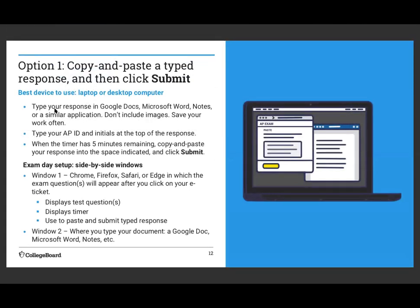First, copy and paste. You have to use either Google Docs, Microsoft Word, Notes, or some sort of word processing app to type your answer. You may not type directly into the AP exam. You'll type your AP ID — which is on your ticket — and your initials at the top of your response. When the timer has five minutes remaining, copy and paste your response from your word processor into the exam. You'll need two windows: one browser window for the test and timer, and another for Google Docs, Word, et cetera. If you have a laptop or desktop, this is the option I would recommend.